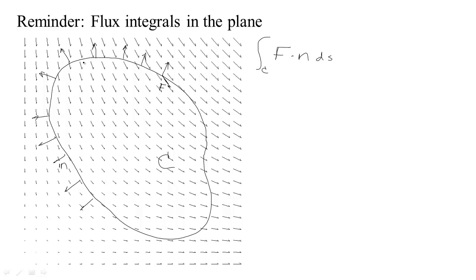In this vector field we have places where F·n is going to be negative because F is in an opposite direction from n, or the angle between F and n is more than 90 degrees. But in other places we're going to have a positive value for F·n. When we sum all this up, the integral of F·n ds gives the total flow out across the boundary.